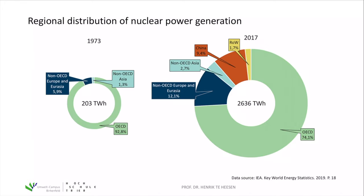International Energy Agency data on the regional distribution of nuclear power generation shows that in 1973, more than 90% of nuclear power generation was located in OECD countries. Today, the total is more than 12 times larger than in 1973, with OECD countries still contributing about three quarters of global nuclear power generation. China has a share of about 10%, but China's nuclear share is still rather small compared to its coal power generation — nuclear power is still used mainly in OECD countries like the United States, Europe, and Japan.